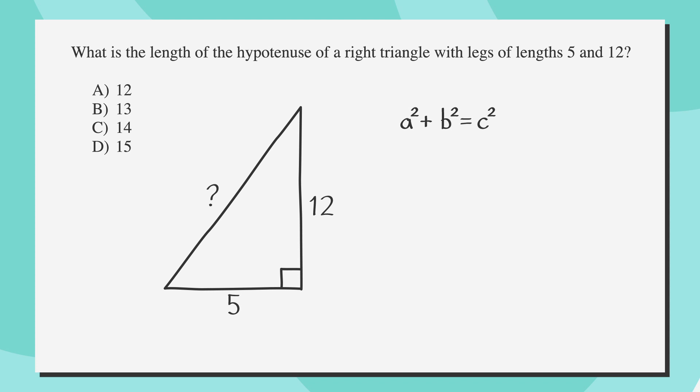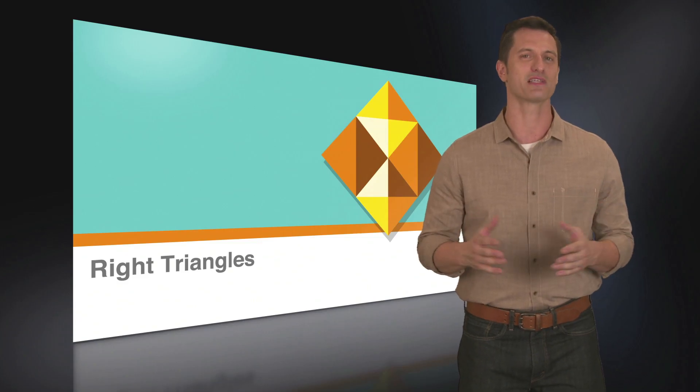To find the missing side of our triangle, we need to plug into the Pythagorean theorem, which says that a² + b² = c² for any triangle where a and b are legs and c is the hypotenuse. In our example, we can set a = 5 and b = 12, so a² + b² = c² becomes 5² + 12² = 169. To solve for c, just take the square root of both sides to get c = 13. The correct answer is answer choice B.